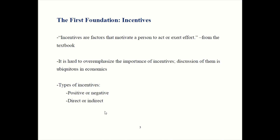Because indirect incentives are implicit, it's easier to overlook them. Oftentimes when a policy has some bad unintended consequence, it's because the policy makers overlooked these indirect incentives. We'll see a number of examples of that.